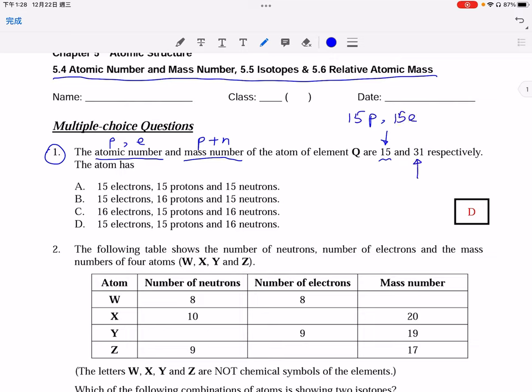While mass number being 31, it means that the number of neutrons can be found from mass number minus atomic number, that means 16 neutrons. So the answer is D.